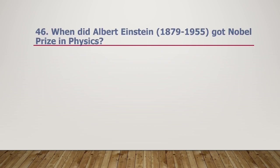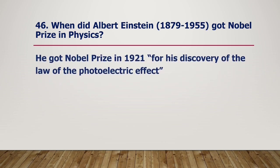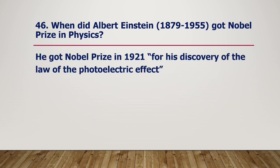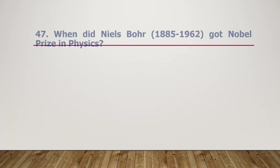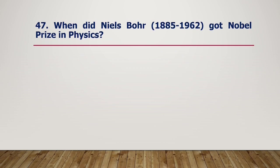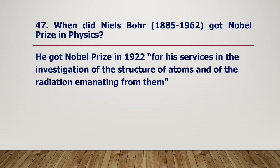When did Albert Einstein, 1879–1955, receive the Nobel Prize in Physics? He received the Nobel Prize in 1921 for his discovery of the law of the photoelectric effect. When did Niels Bohr, 1885–1962, receive the Nobel Prize in Physics? He received it in 1922 for his services in the investigation of the structure of atoms and of the radiation emanating from them.